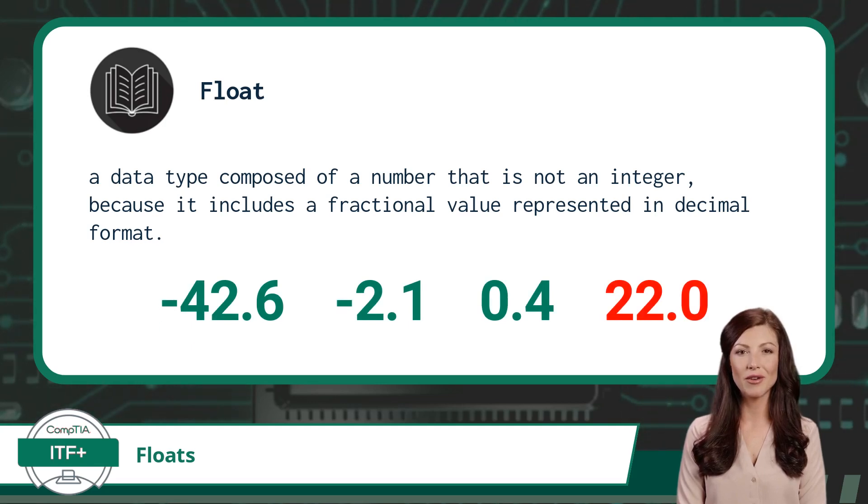The zero in 22.0 adds no additional value to the number and could easily have been represented as just 22, but as long as there is a decimal point this will belong to the float data type and not the integer data type.